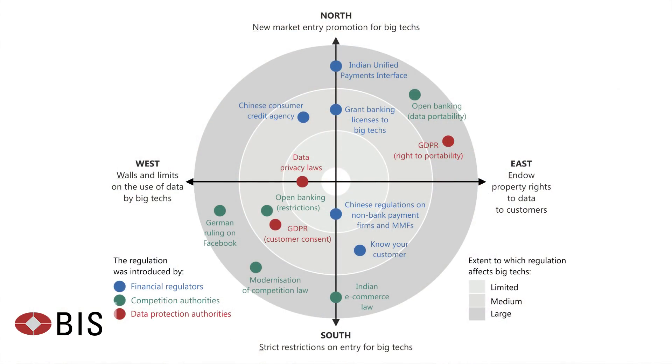We introduced a graphical device called a regulatory compass, where the idea is to map each direction in the compass to a particular dimension of policy. The conclusion we draw is that it's still too early to have a definitive answer on which combination of policies is going to be the best. But one thing is certain: the various interactions between financial stability regulations, competition policy, and data privacy regulations have the potential to interact in very complex ways that we may not be able to foresee at the beginning.